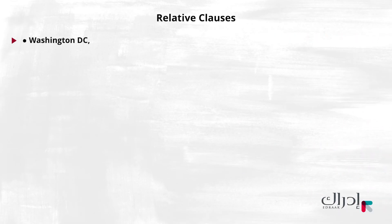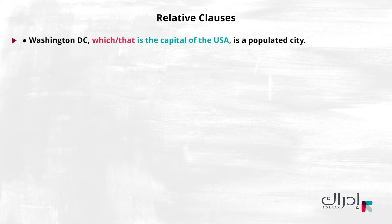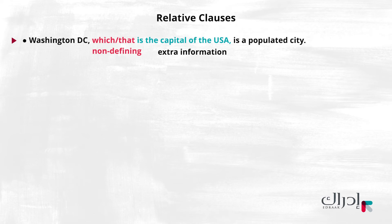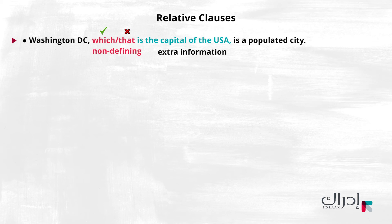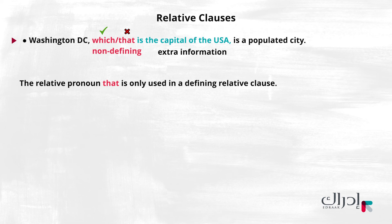Finally, look at this sentence: 'Washington DC, which/that is the capital of the USA, is a populated city.' What did you notice about this sentence? It has a non-defining relative clause — 'which is the capital of the USA' is extra information, as Washington DC already has the identity in its name. Did you notice that which and that are given as options? The non-defining relative clause is correct with which and not that. That is not used in a non-defining relative clause — the relative pronoun that is only used in a defining relative clause.